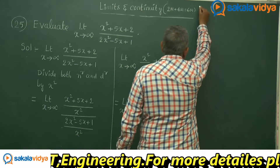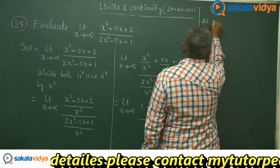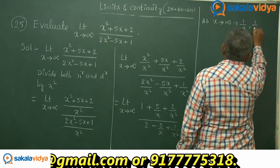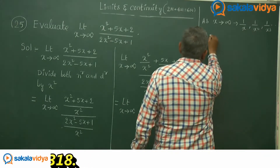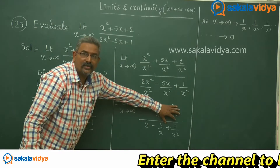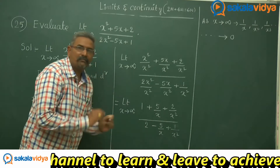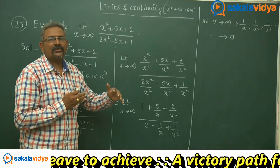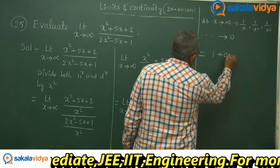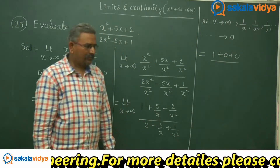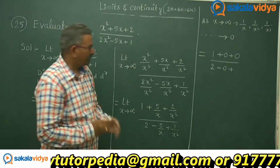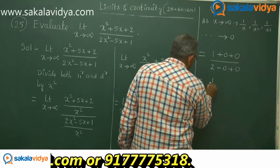So we apply this fact: as x tends to infinity, 1/x and 1/x squared approach 0. That means 5/x is replaced by 0, 2/x squared is replaced by 0, and 1/x squared in the denominator is also replaced by 0. Replacing with 0, we get 1 plus 0 plus 0 divided by 2 minus 0 plus 0, which equals 1 over 2. This is the required limit.